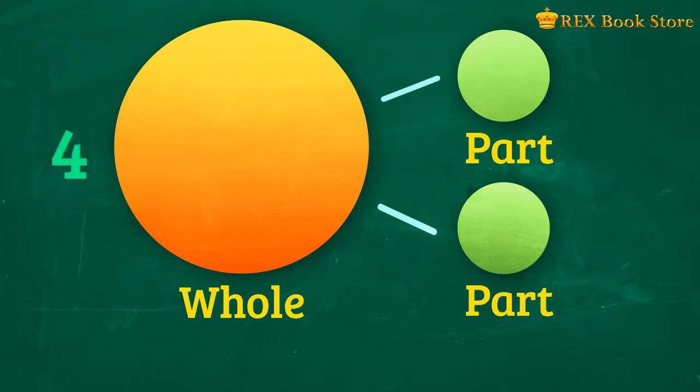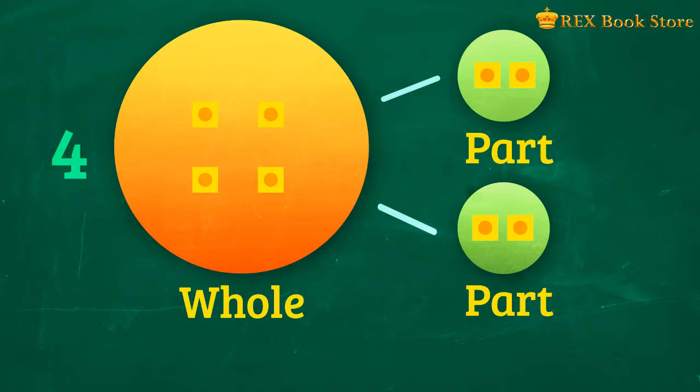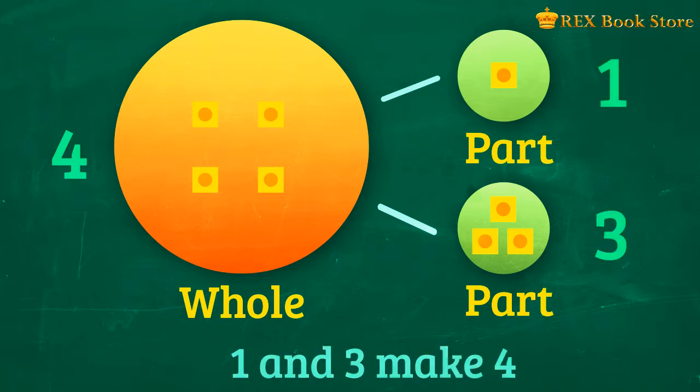Let us make number bonds for 4. We say that 2 and 2 make 4. But that's not the only number bond we can make. We can also have 1 and 3. We say 1 and 3 make 4.